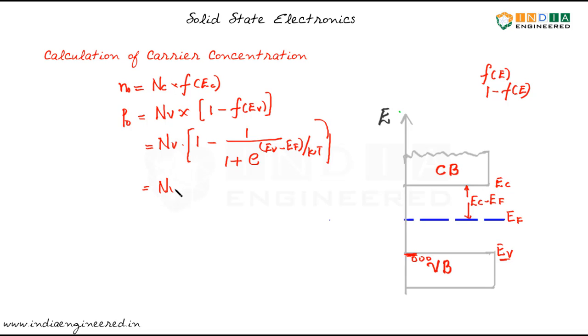So this we can reduce into Nv into 1 plus e power Ev minus Ef by kt.